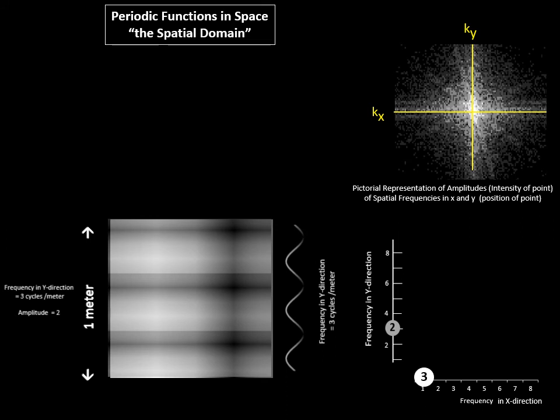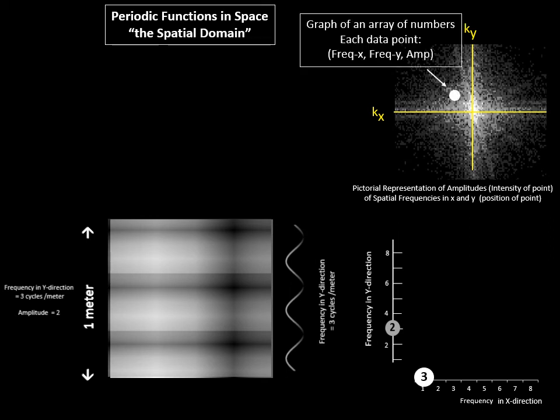The axes when we're dealing with spatial frequencies are conventionally labeled as k sub x and k sub y, but it's important not to lose sight of the fact that each dot in this single graph represents.